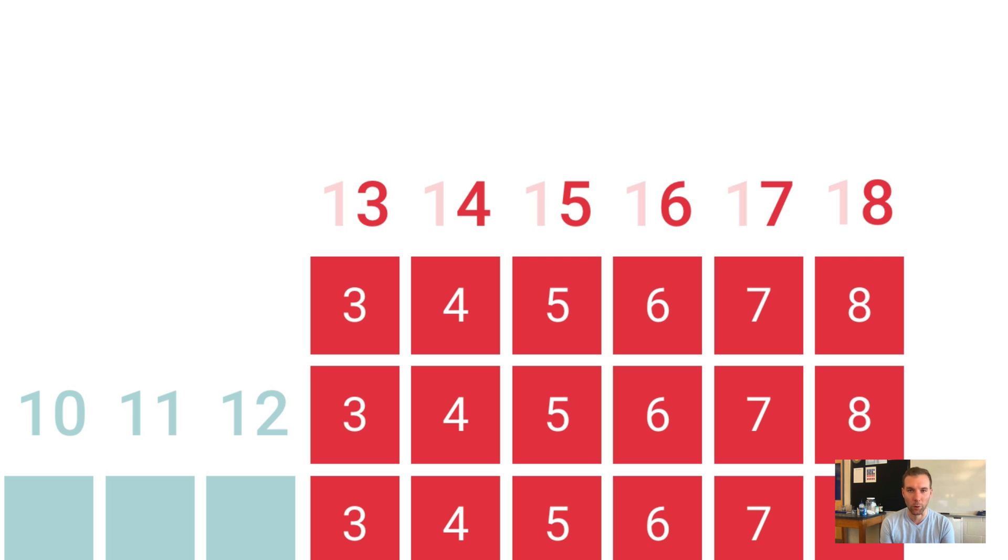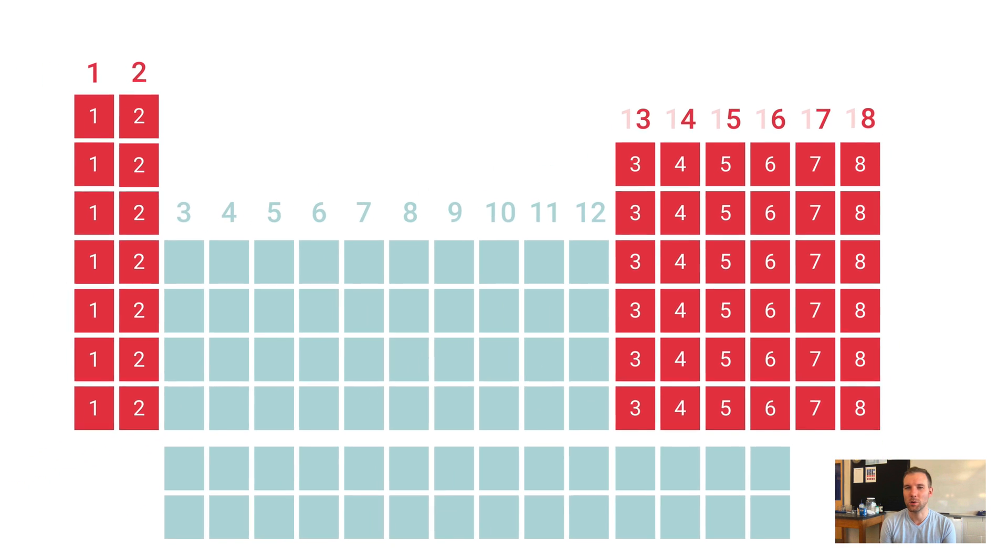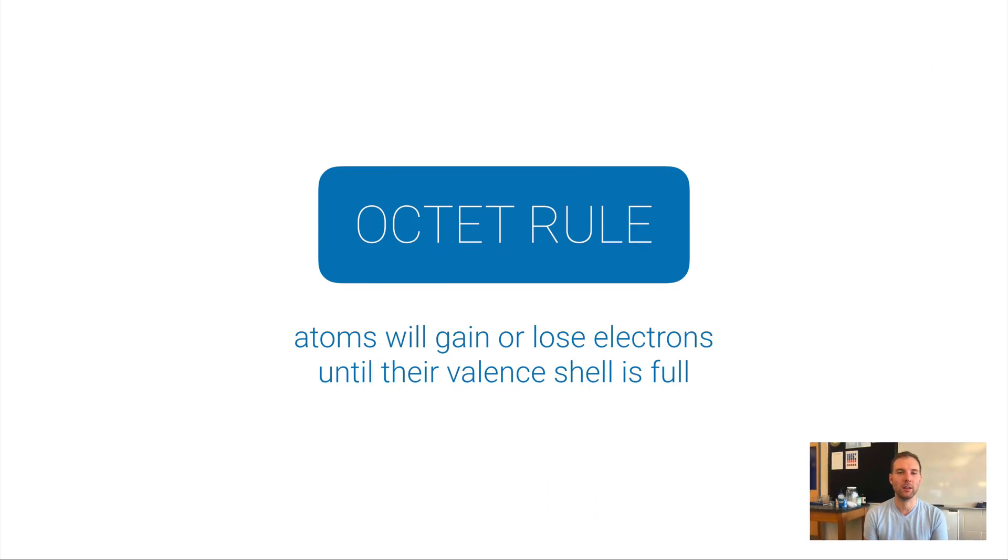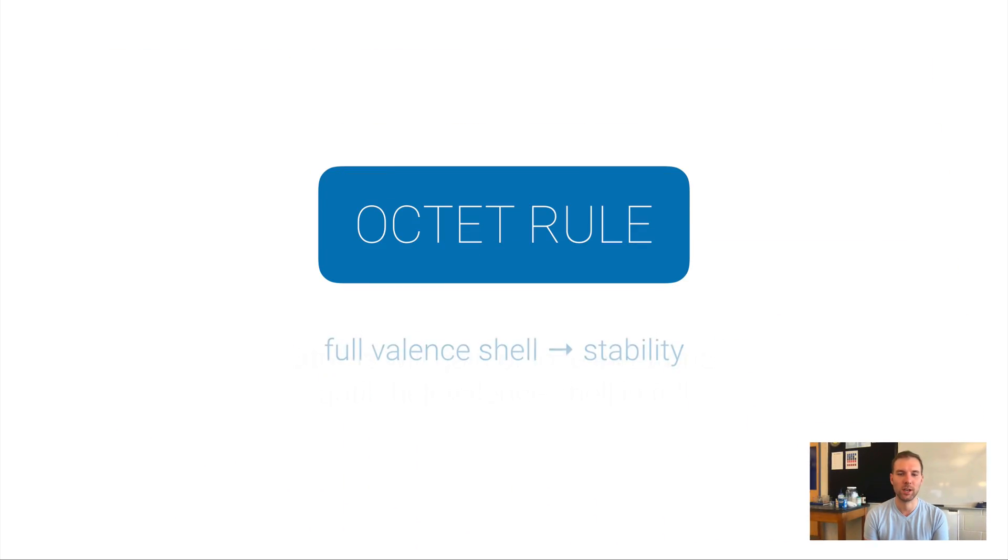There's something you should know called the octet rule. The octet rule says that atoms want to gain or lose electrons until their valence shell is full. For most elements on the periodic table, a full valence shell means having eight electrons in their outermost shell, hence the name octet rule. The reason elements want a full valence shell is because a full valence shell means the element is stable.